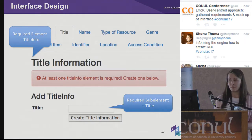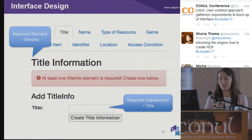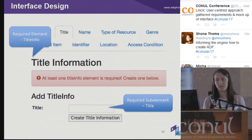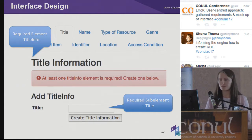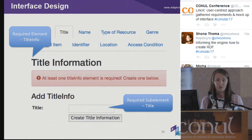When you click into an element, we wanted to ensure each record created would meet the minimal standards as per the DLF guidelines. So when you click into an element, initially the only sub-elements you see are the ones that are required. For example, in title info, title is a required sub-element, so you're unable to enter any other information until you've entered that minimal piece of information first. This ensures that all records meet the requirements.